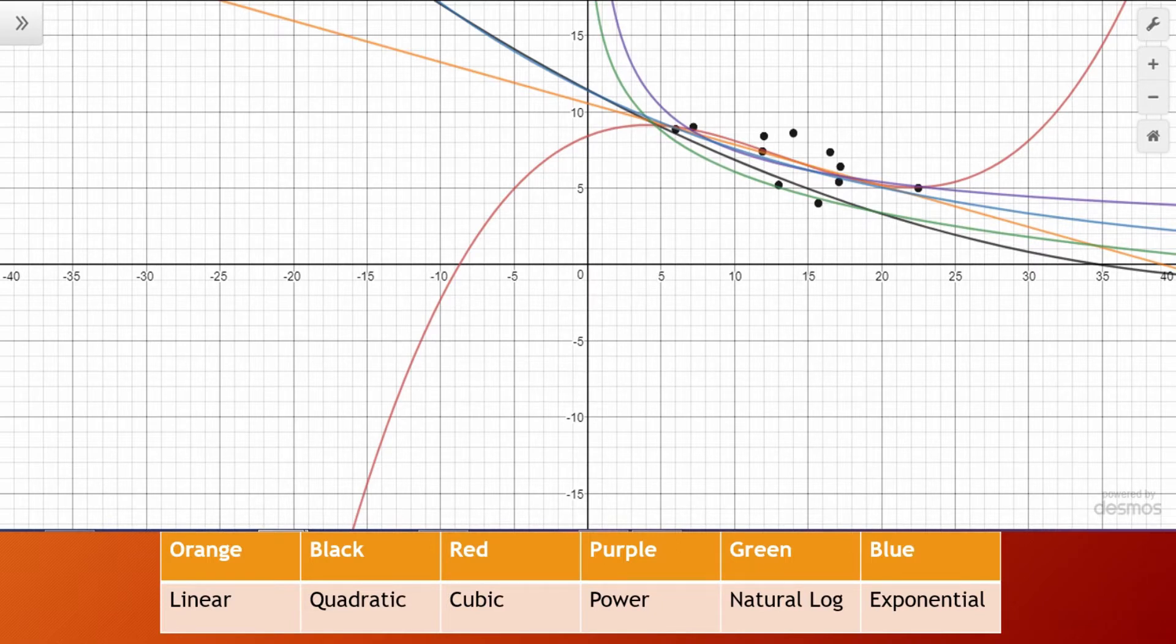So in this graph as you can see we compared all the different regression equations that we found and saw which one best matched the data that we calculated. So the quadratic and cubic equations both best reflected the data that we had and both have the highest r squared values as well.